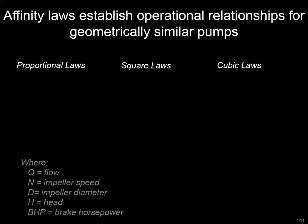There are different ways that these variables interact, and they follow either proportional, square, or cubic laws. When we look at things like speed, diameter of the impeller, and the resulting flow, there's going to be a linear relationship based on these laws, where you make one change and you're going to have a proportional change in the other variable.